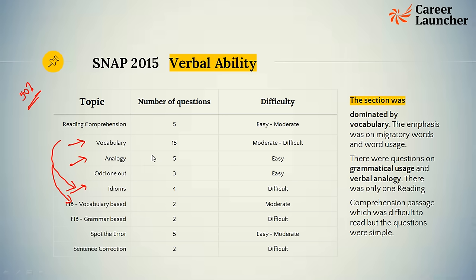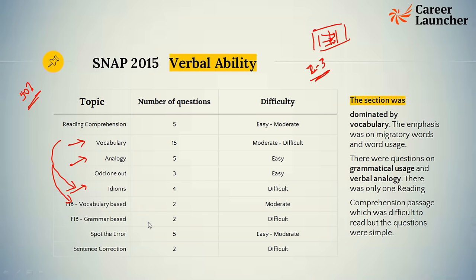The options are not very close together, so elimination does help. There is a particular type of question that SNAP generally loves — the tabular matching question — where they give you a table with two columns, say ten words and ten meanings, and ask you to match them. Options state the correct matching pairs, and that is where elimination really helps. Even if you know the meaning of two or three words, you can probably get the correct option. Don't worry too much about the kind of words that crop up because they are not very difficult.